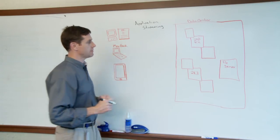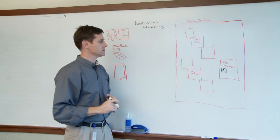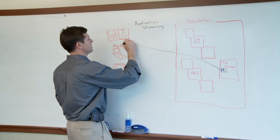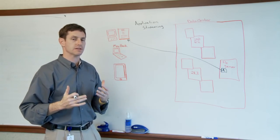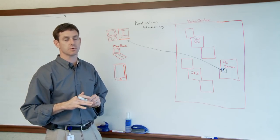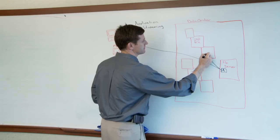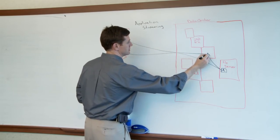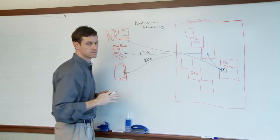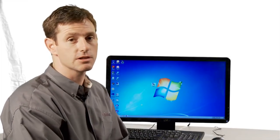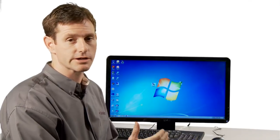ZenDesktop application streaming is the concept of packaging applications, placing them on a file server, and delivering the application — whether it's App-V or a Citrix profiled application — to a Windows endpoint device. For non-Windows endpoints, Citrix can deliver the application to an application server and then from there deliver it to non-Windows devices over a presentation layer protocol, ICA. ZenDesktop includes the ability to stream both Citrix profiled applications as well as Microsoft App-V applications.